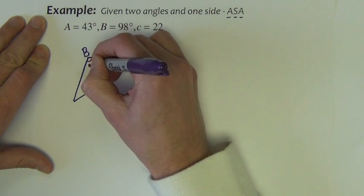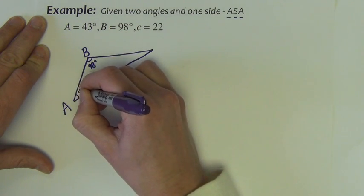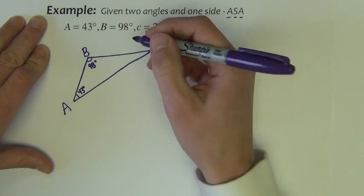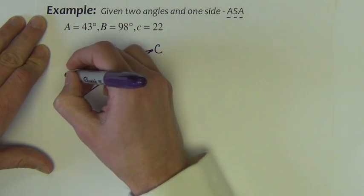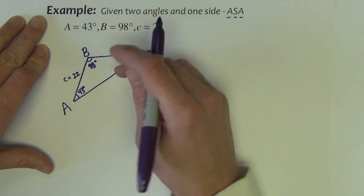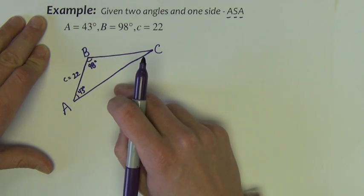So this is angle B. It measures 98 degrees. Let's just call this one A. It measures 43 degrees. That leaves this to be angle C. Side c is right across from angle C. Side c is 22. So we're left with trying to find angle C, side a, and side b.